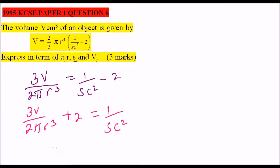To make it a bit simpler for us, let's make this 2 pi R cubed as a common denominator. So we have 3V plus, we multiply 2 pi R cubed by 2, you get 4 pi R cubed, all this is divided by 2 pi R cubed.